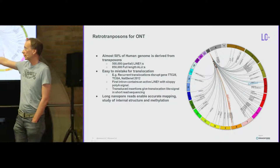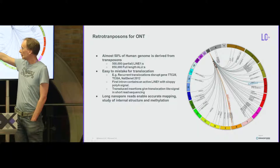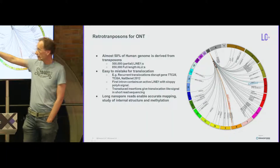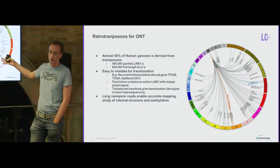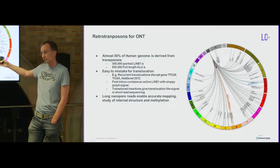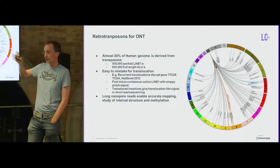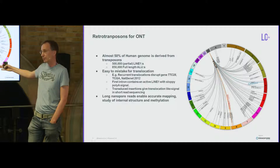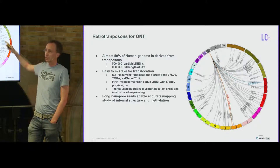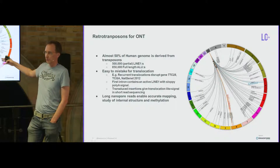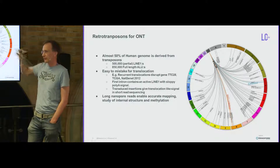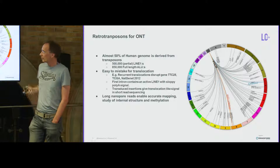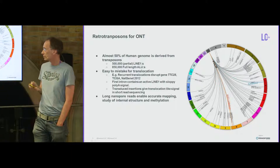This particular LINE-1 has a sloppy polyadenylation signal at the end — basically a sloppy end-of-transcription signal. So often the transcription goes past the end of the LINE-1 and copies the unique sequence downstream from the repetitive LINE-1. That will provide mapping information that looks like a translocation.